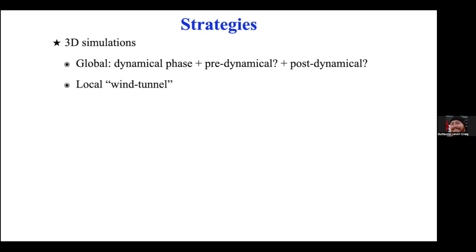Right now we can't simulate the full common envelope phase, but eventually, ideally, we would be able to. Some groups also do local 3D simulations — so-called wind tunnel simulations — where they simulate just a small cube inside the giant star, fix the companion at the center, shoot a wind through the side of the cube to simulate the companion's orbital motion, and calculate the drag force. These are less computationally demanding but have their limitations, as we will see.